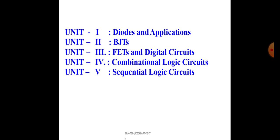The fourth unit is Combinational Logic Circuits and the fifth unit is Sequential Logic Circuits. The first three units come under analog electronics, and the remaining two — the fourth and fifth units — come under digital electronics.